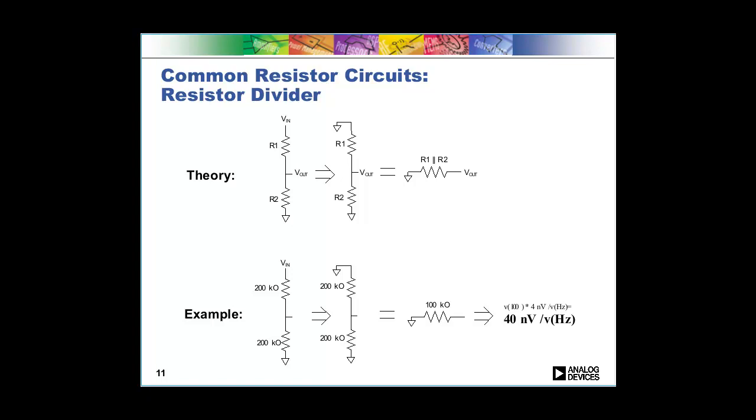So now that we've talked about how single resistors work, let's talk about a couple of resistive circuits. One very common resistive circuit is a voltage divider. As we learned in school, the resistance of a voltage divider, the output resistance, is the parallel combination of the two resistors in the voltage divider. And this works exactly the same way for calculating noise. You take your resistors, figure out the parallel combination, and then you can figure out what the noise of the divider is.